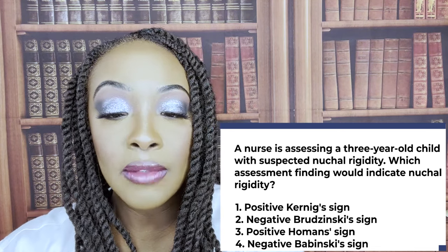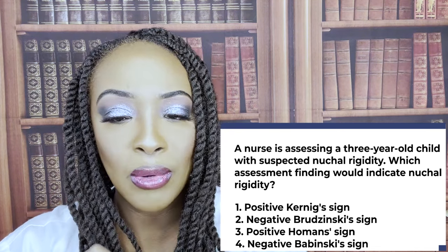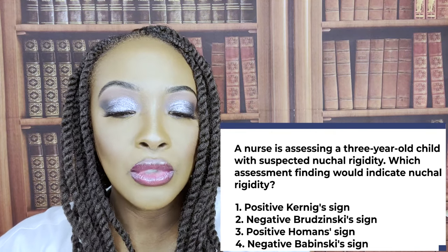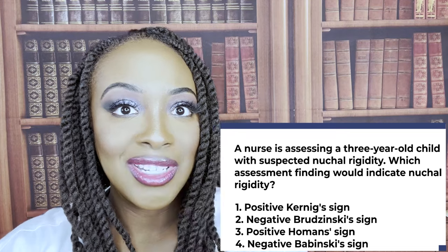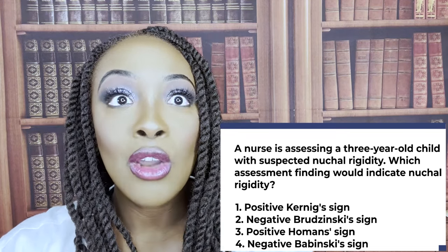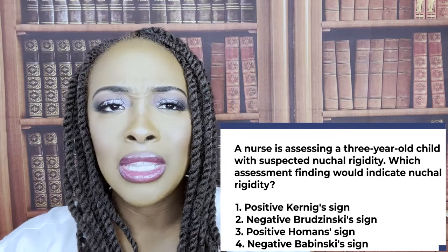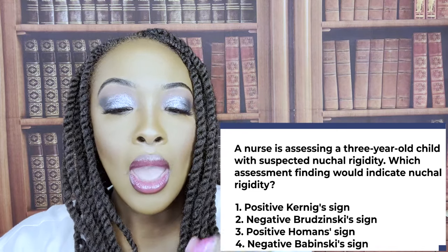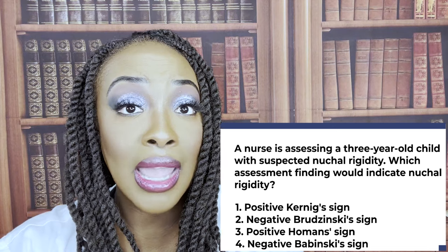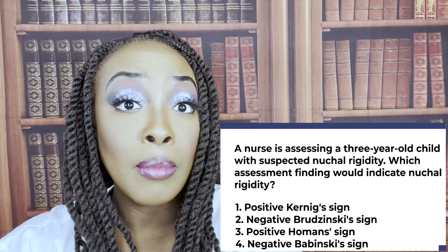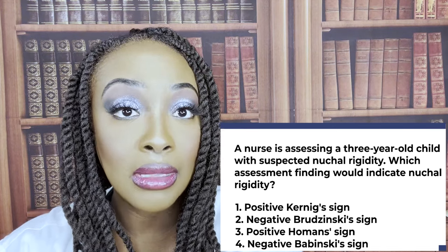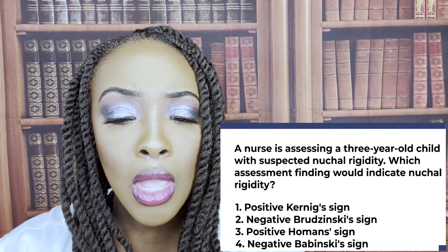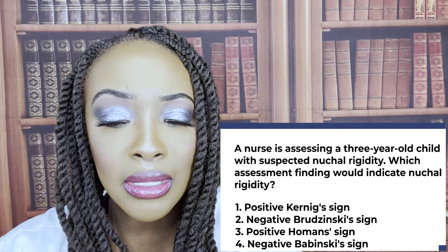With the positive Koenig sign, let's go back to the question. The key words here are 'nuchal rigidity.' When you hear nuchal rigidity, one of the first things that needs to be going on in your mind is possible meningitis. A positive Koenig sign is a sign of possible meningitis, so that's why that's the answer. Now let's look at the wrong answer choices.